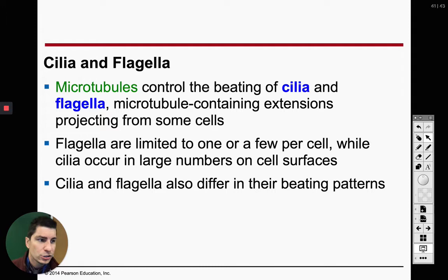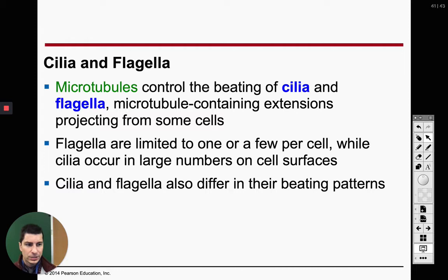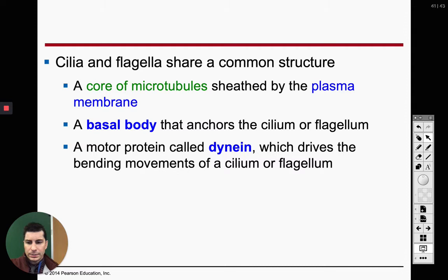Cilia and flagella are two different structures that allow some smaller cells — like bacterial cells, parameciums, things like that — to move. I'm going to show you a video on how we're able to move the structures. Cilia are really tiny hairs, and the flagella is much bigger.